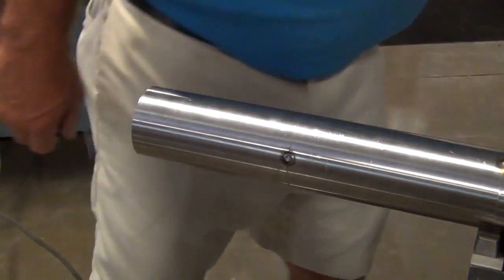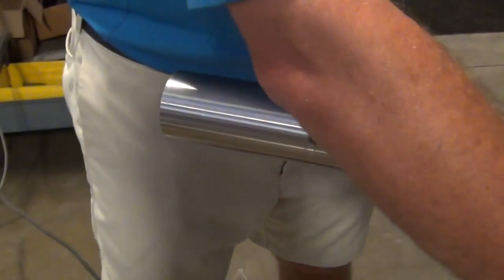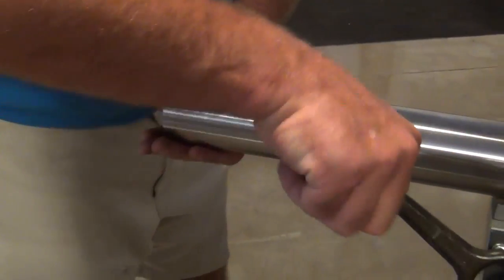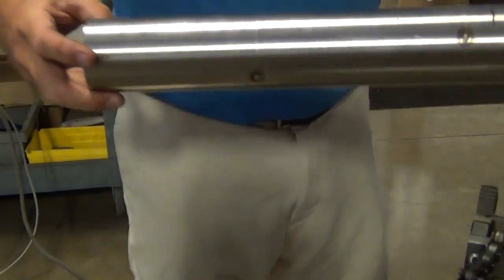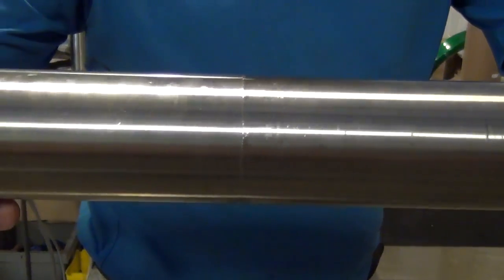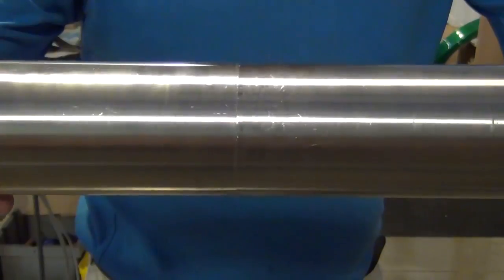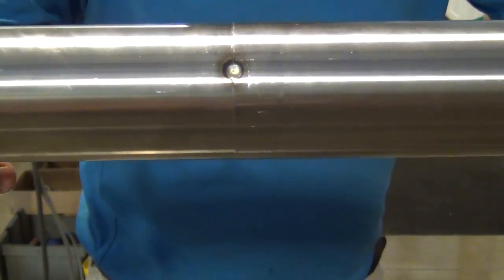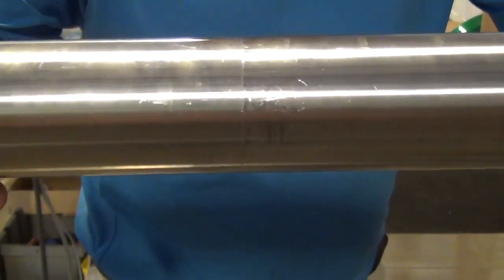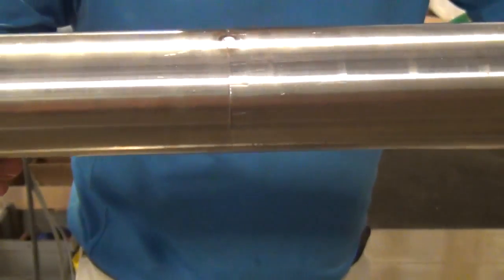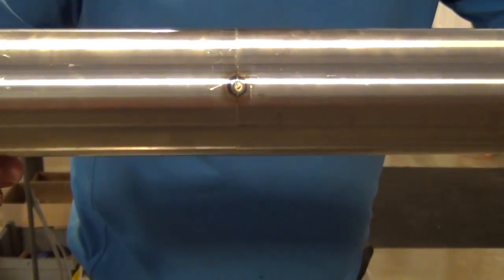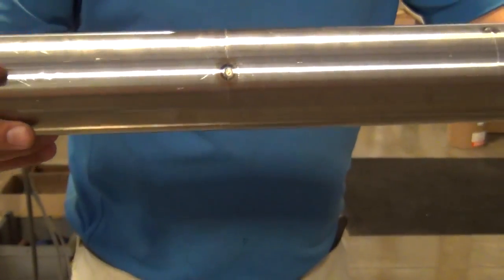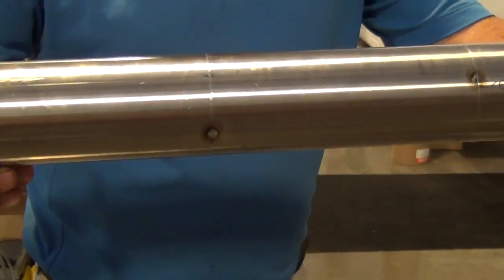Basically what you have now, your end result is two pieces of tubing that are tacked together that are ready for orbital welding that are pretty square and tight. There is no mismatch. We're not going to see any gaps. It's going to make everything that you're doing as far as the welding process much easier.